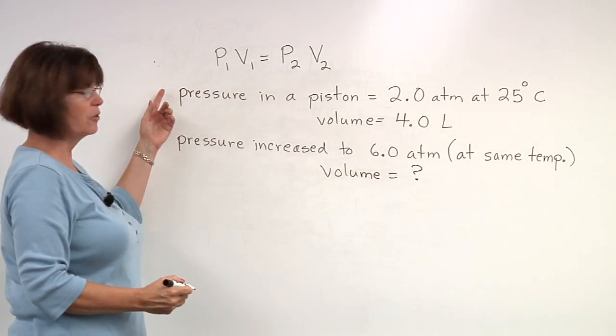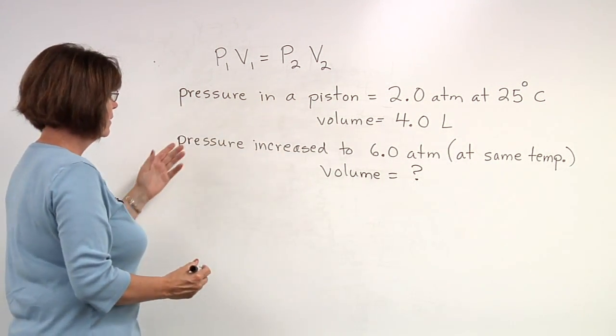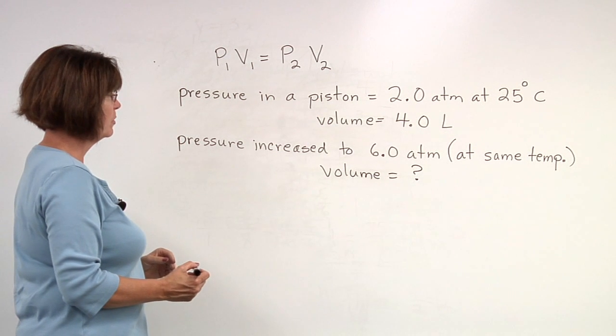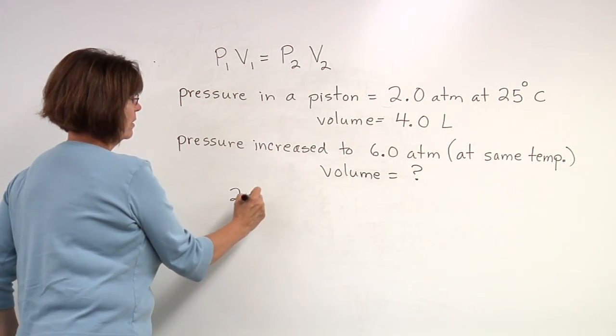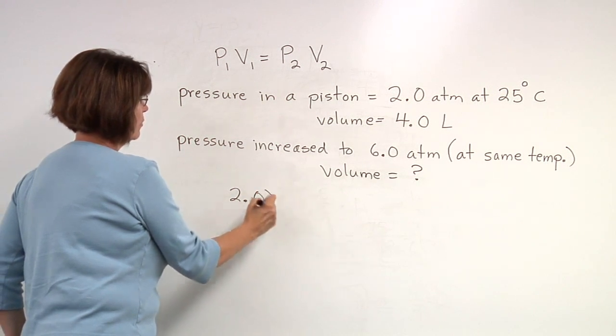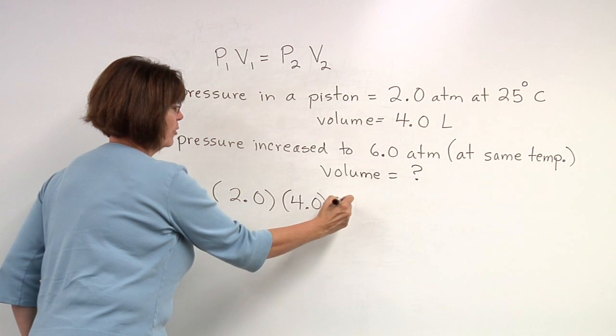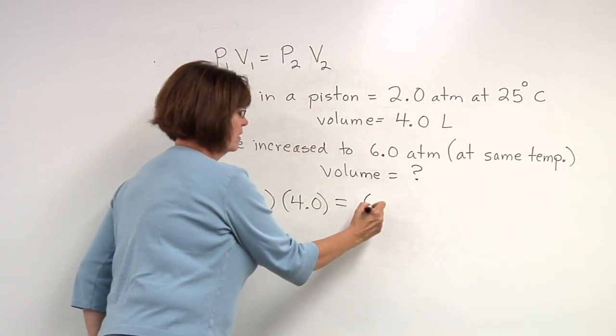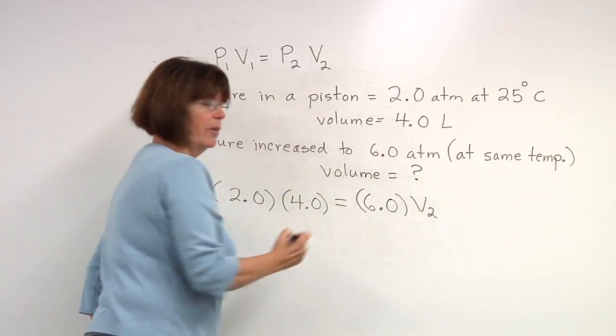So we're going to call this pressure one and this volume one. This is pressure two and volume two. So we're going to have the equation: pressure one, two, times volume one, four, equals pressure two, six, times volume two, unknown.